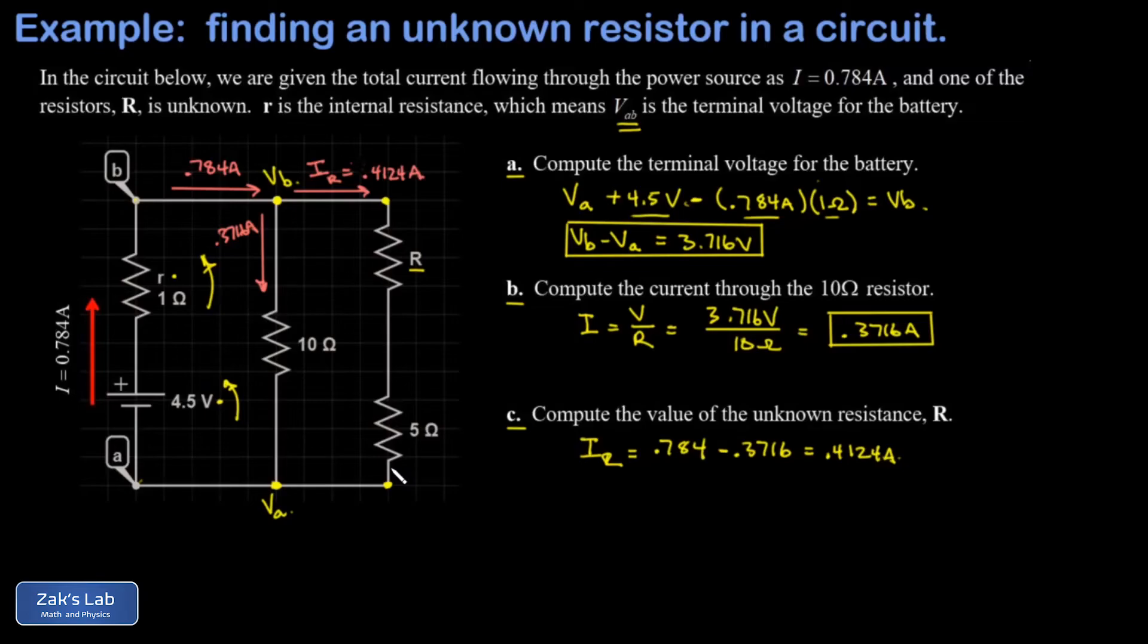So I have the potential difference across it. I have the total current through it. That allows me to get the total resistance of that branch. And then if I just subtract the 5 ohms out of that, I'll have the resistance capital R.